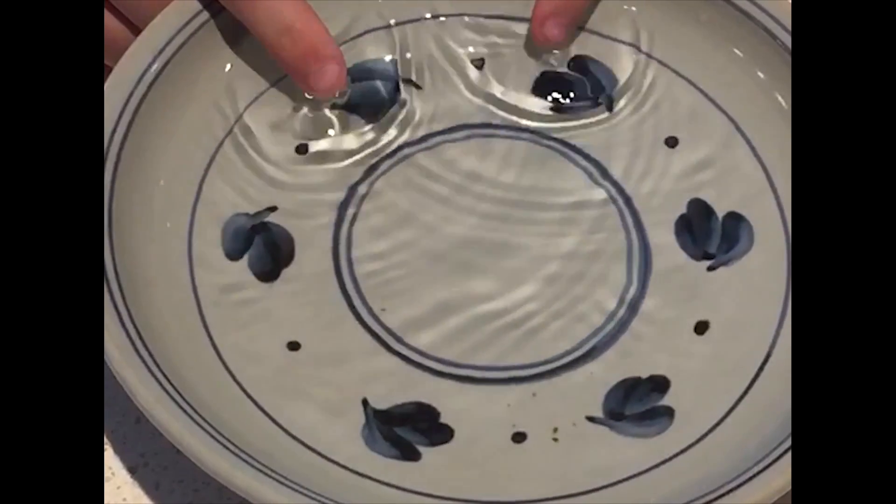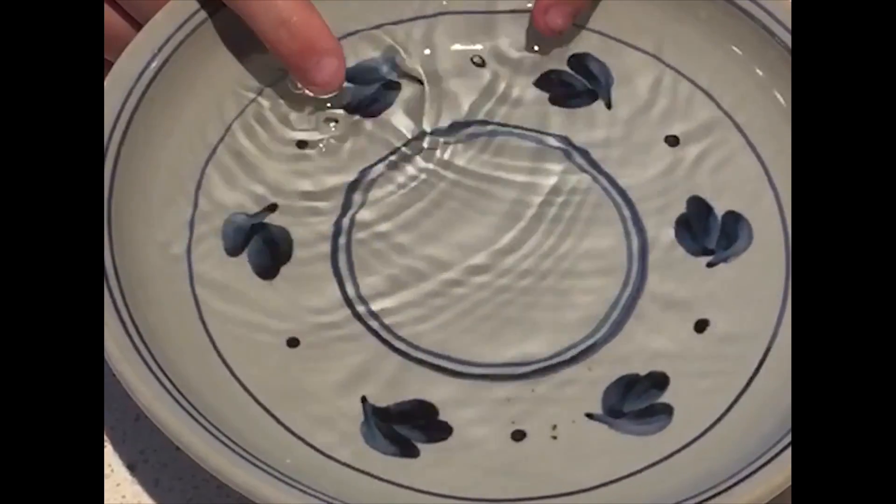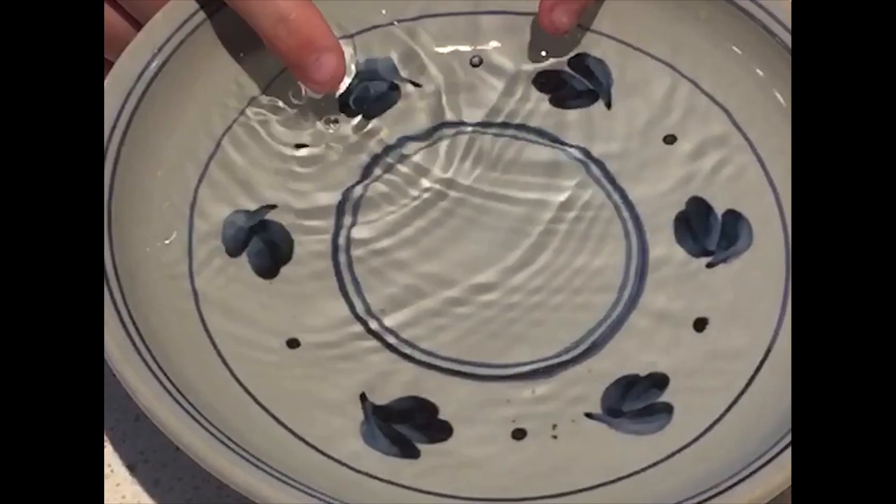This interference can be simulated by energy waves in water. One telltale sign of a wave is if it interferes with another wave, it either adds up or cancels itself out. You can see this phenomenon highlighted by the blue circles.